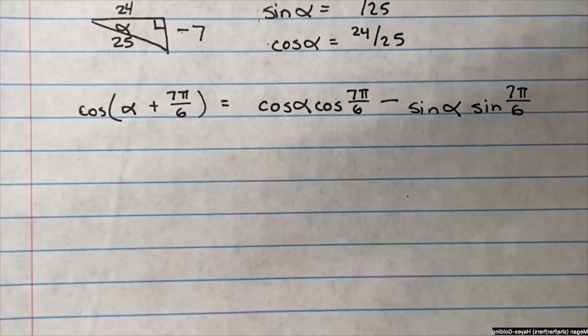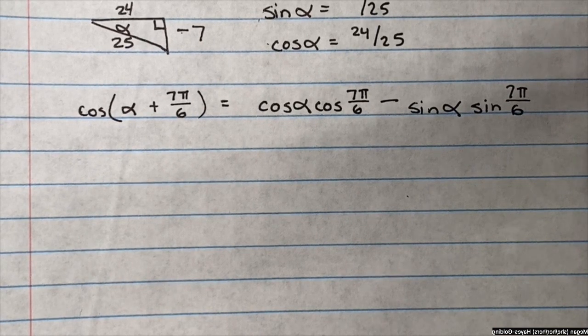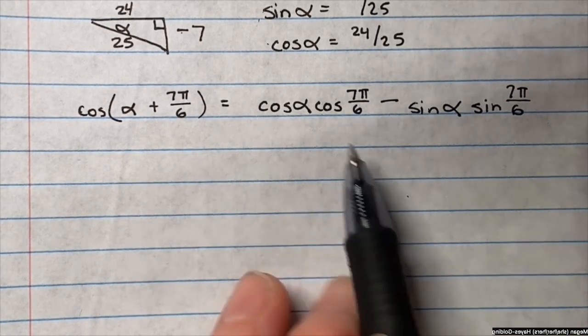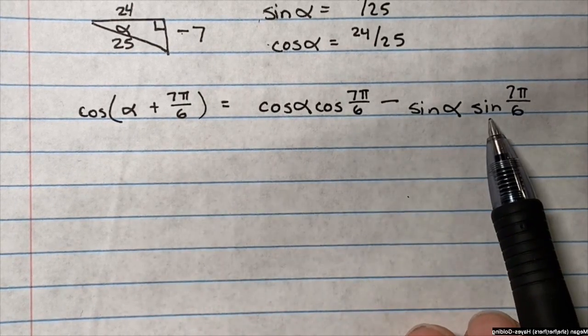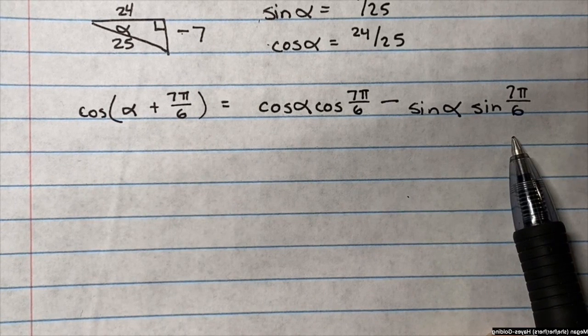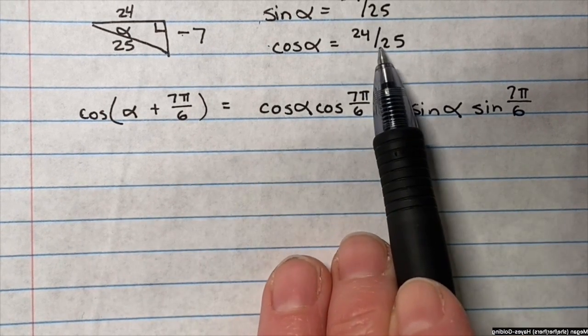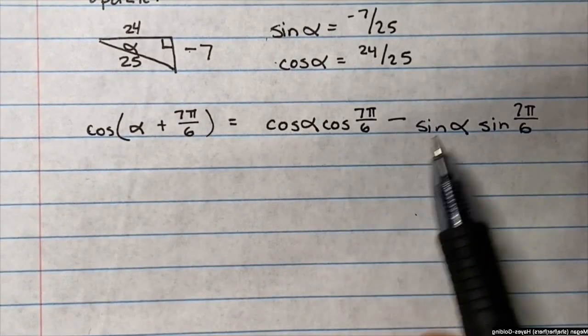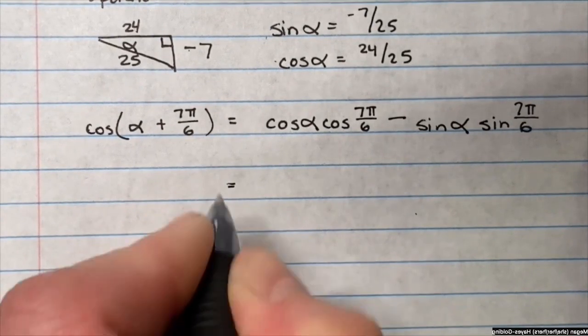This is the exact value of the sum of these two angles. And again, I got this from the equation for cosine addition. So I can evaluate cosine 7 pi over 6 and I can evaluate sine 7 pi over 6 by referencing the unit circle. Cosine alpha, I just wrote down previously. Sine alpha also wrote down that previously. So let's make some substitutions.